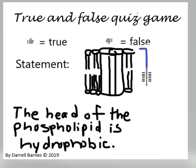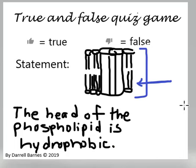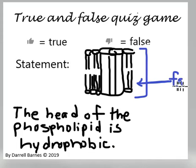The cell membrane is made up of a phospholipid bilayer. These little pieces that have a head and tails look like little tadpoles. Those are the phospholipids, and the tail portion specifically is made out of fatty acids. That's what makes your skin so soft.